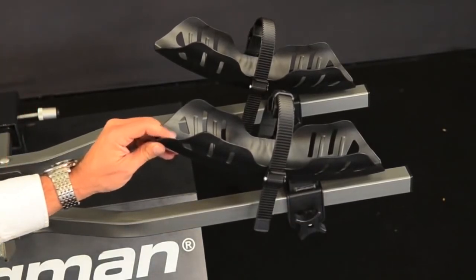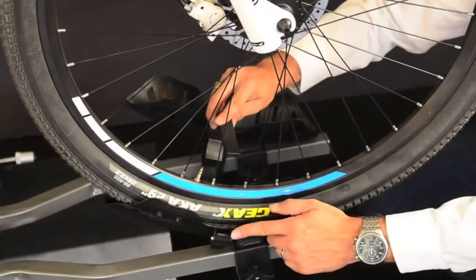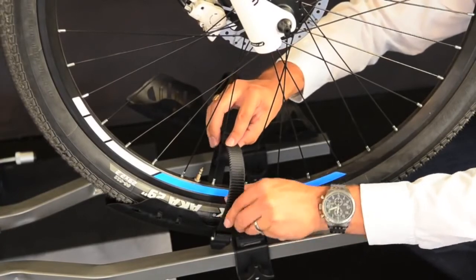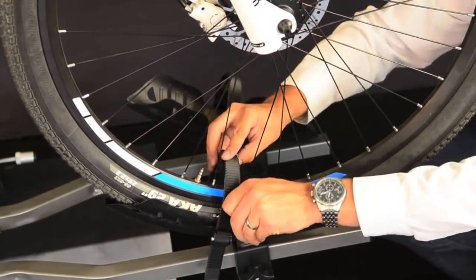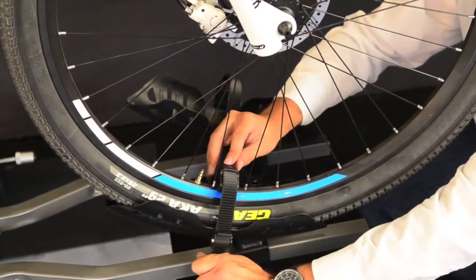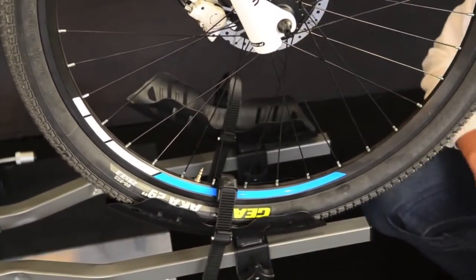It also allows you to stagger the bikes to avoid contact between bike 1 and bike 2. The ratchet straps go over the wheels and down into the clip. There is a compressible wheel chalk to allow for a more secure fit.